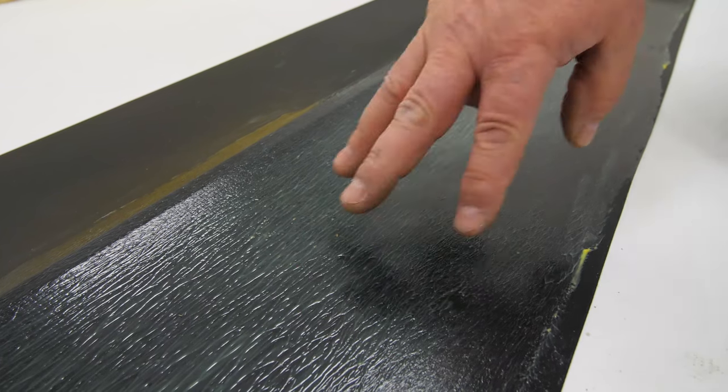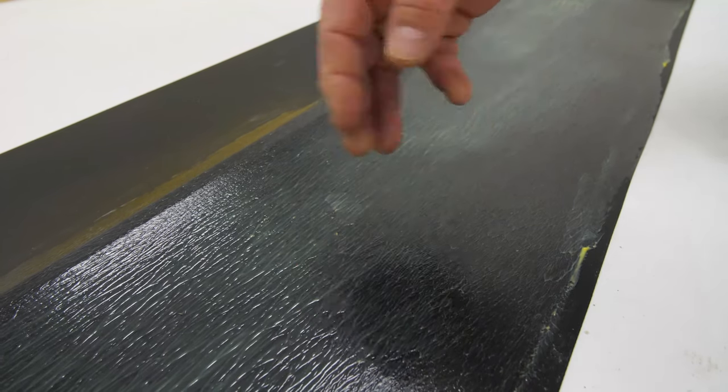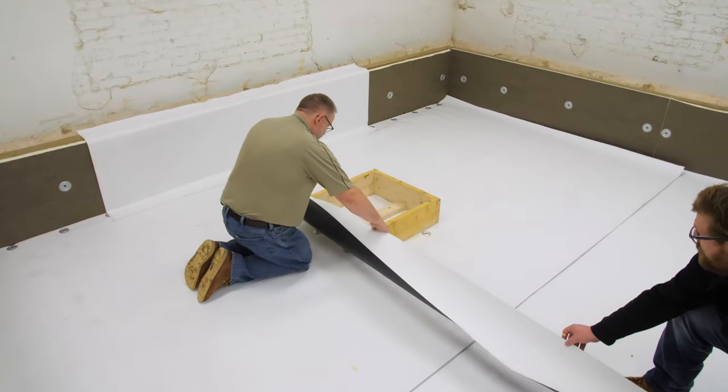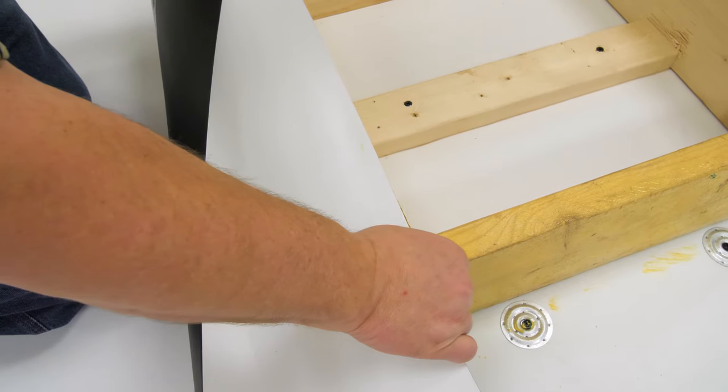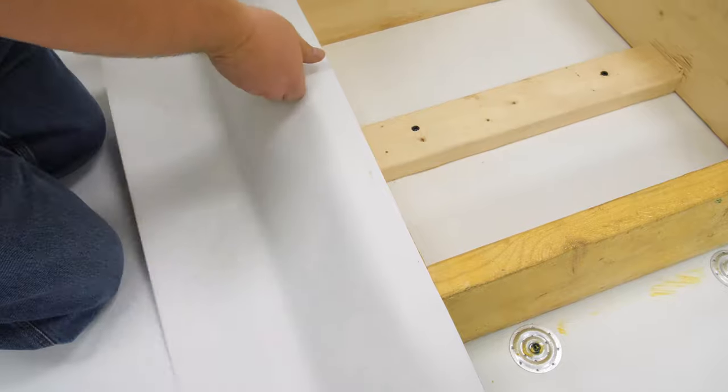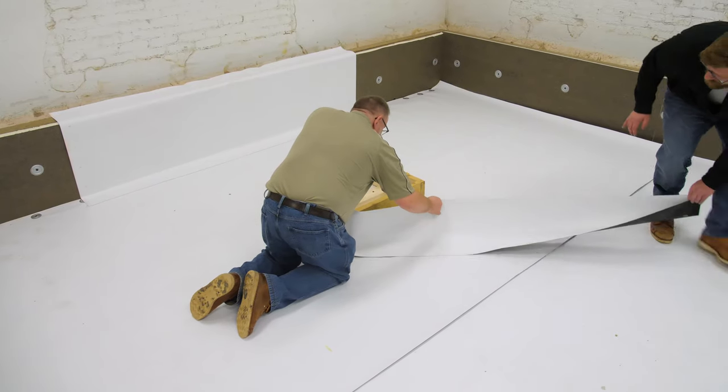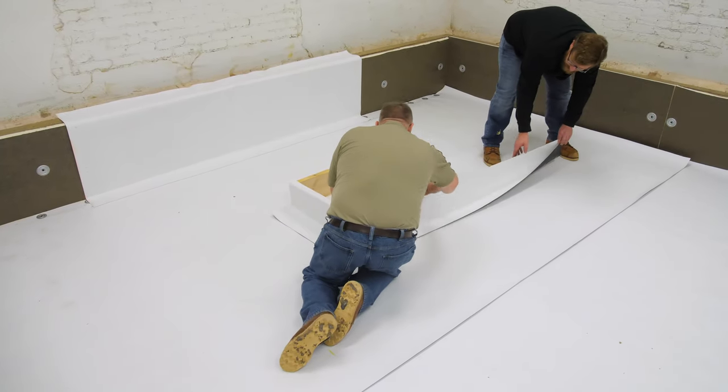Let the adhesive flash off until tacky. It should be tacky but not string to a dry finger. Hang flashing by setting the top edge of the flashing to the inside edge of the curb. Start at one outside corner and use slight tension to eliminate wrinkles as you work all the way around the curb.